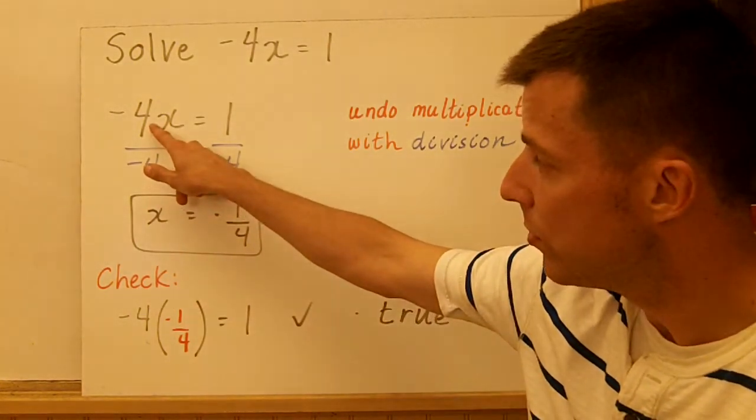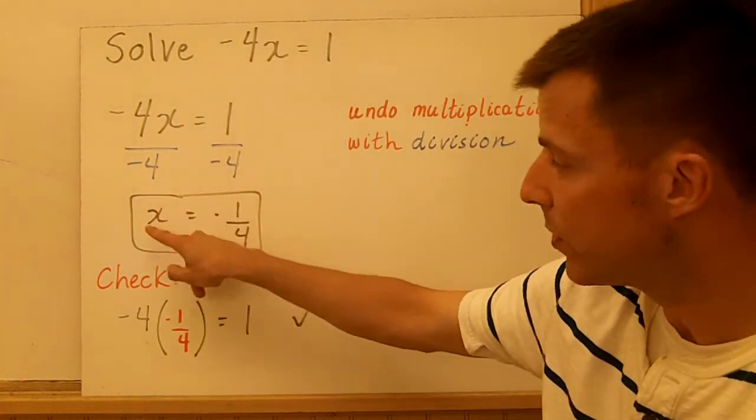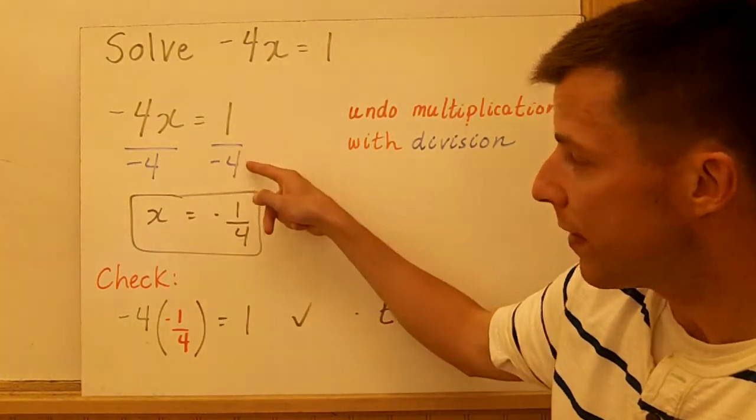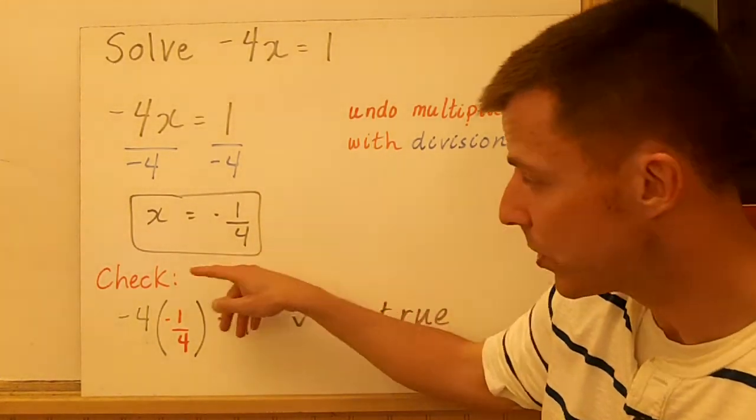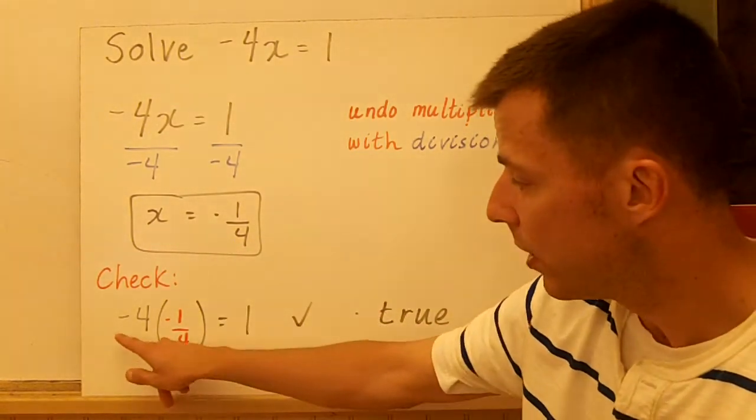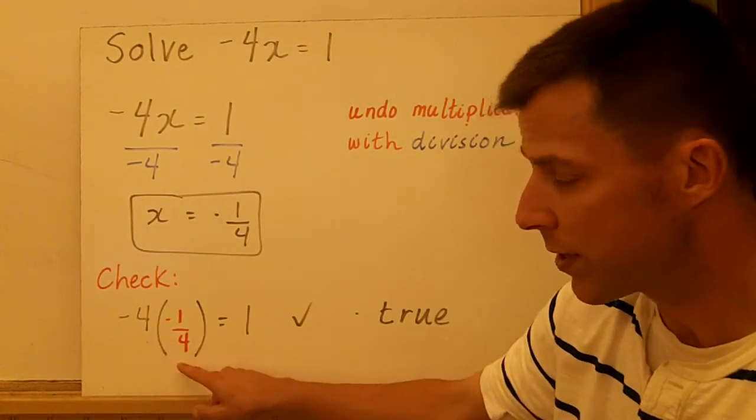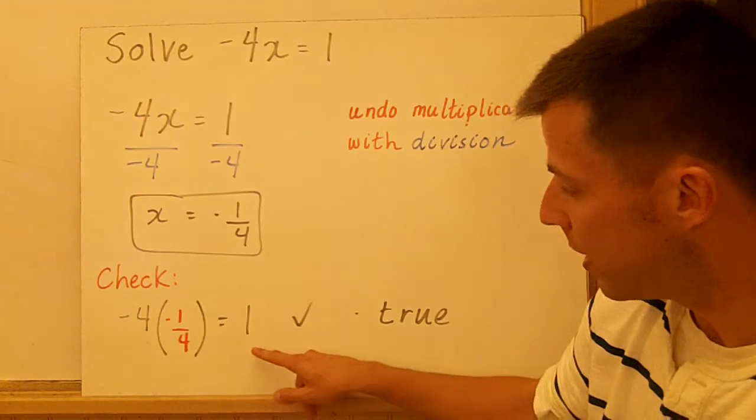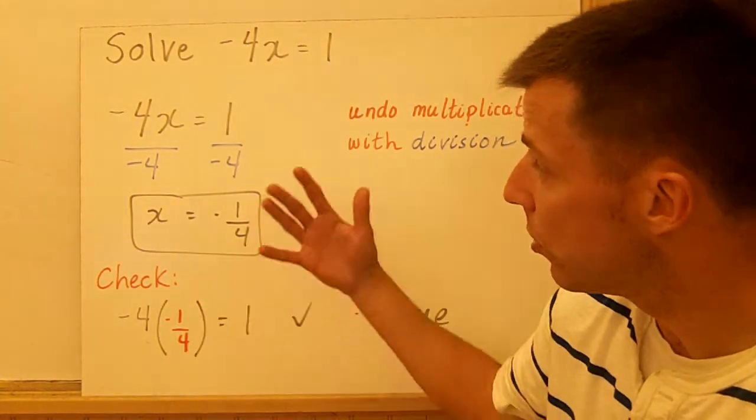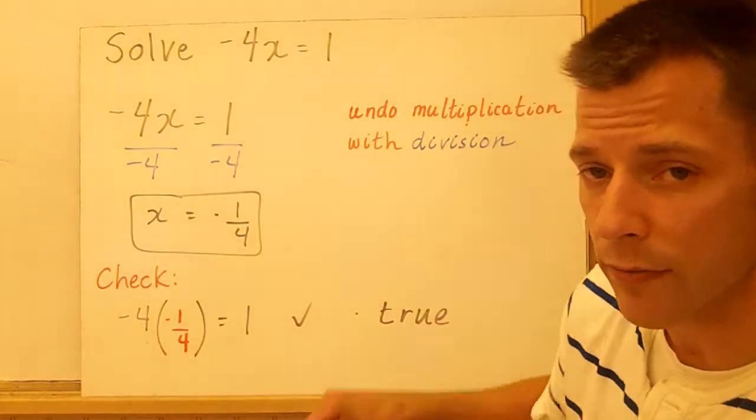But how do we get that? Well, to undo multiplication, you divide each side by negative 4. Negative 4 divided by itself is 1, and you're left with x on the left side. 1 divided by negative 4 is negative 1/4, so x is equal to negative 1/4. You can check your answer. Negative 4 times its inverse does give you 1. So negative 4 times negative 1/4 is 1. Another true statement. So we've solved another equation. In this case, we used division. We undid multiplication with division.